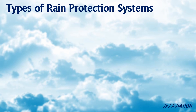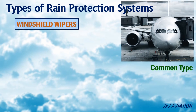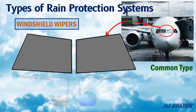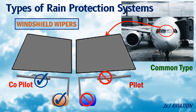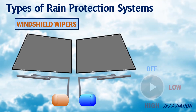Wipers. Windshield wipers are a common type of rain protection system. Two wipers are installed — one for the pilot's windshield and the other for the co-pilot's windshield. These wipers operate using two separate electric motors, so that failure of one motor does not affect the operation of the other motor and wiper. The wipers may be operated at two different sweep speed settings, depending on the requirement.